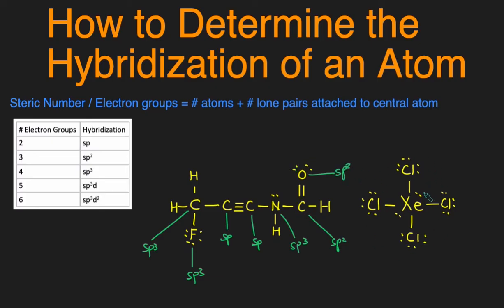Now let's take a look at this compound right here. Let's take a look specifically at the xenon. The xenon has 1, 2, 3, 4, 5, 6 groups that are attached. So its hybridization would be sp3d2.